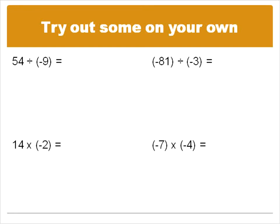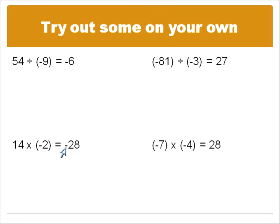Let's take a look at some questions. I've put up four questions — two division, two multiplication — that have some negative numbers and some positive numbers. Go ahead and pause this recording and try to solve these four questions on your own. Check your answers: the first has one negative number so there will be a negative final result — fifty-four divided by nine is six, negative. The second has two negative numbers so the result will be positive — eighty-one divided by three is twenty-seven, positive. The third has one negative number so the result will be negative — fourteen times two is twenty-eight, negative. The fourth has negative seven times negative four, two negative numbers, even number of negatives so the result is positive — seven times four is twenty-eight, positive.